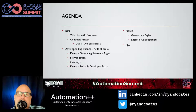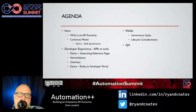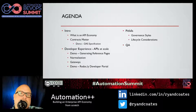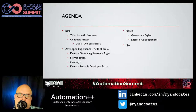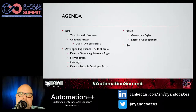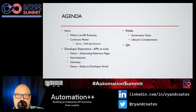In the introduction we will talk about what is an API economy. We will talk about API contracts and then do a quick demo of creating an API specification file. We will go into developer experience and APIs at scale, do a demo on reference pages and API reference documentation, talk about normalization and gateways, and then talk about developer portals and their capabilities. We will also go into pitfalls like governance styles and lifecycle considerations, then a Q&A session.